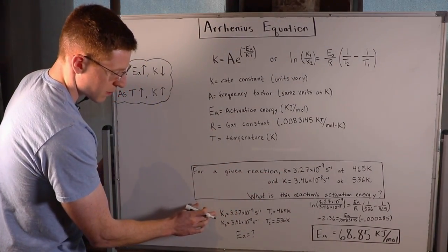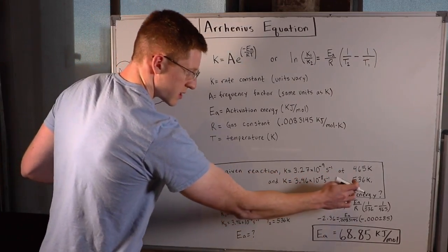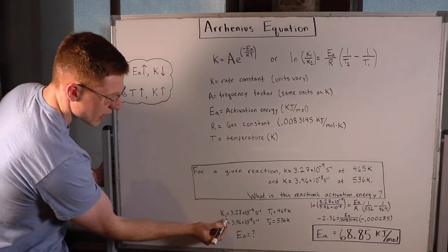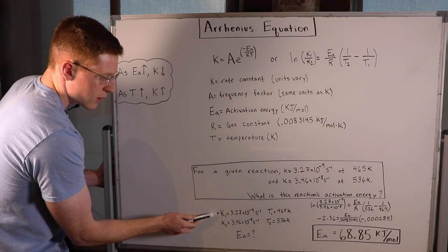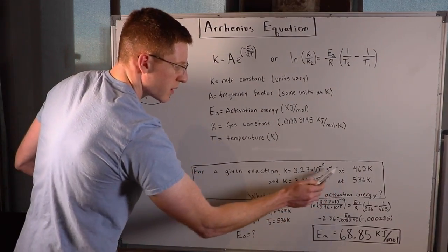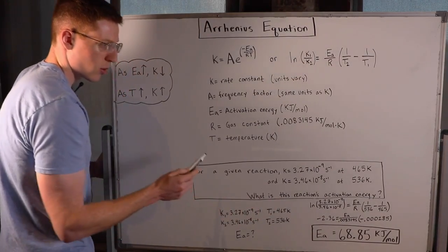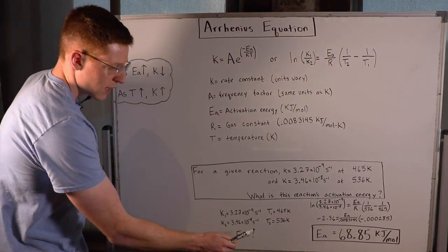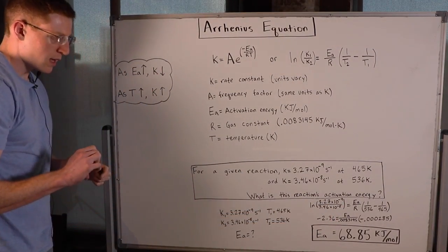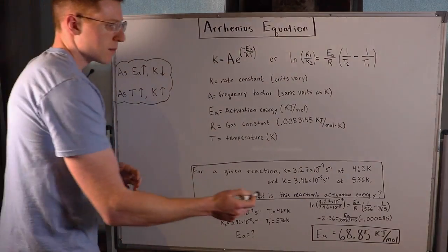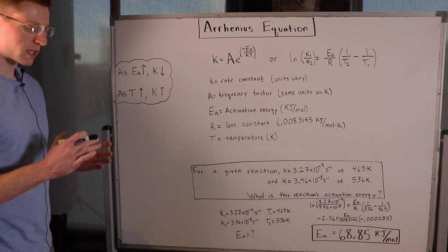The important part is to pair each k with its temperature. K1 is 3.27×10⁻⁹, and T1 is the temperature where that k was present, 465 kelvin. K2 is 3.46×10⁻⁸, and T2 is 536 kelvin. We were given temperatures in kelvin here, but sometimes they're in celsius or fahrenheit and you must convert to kelvin.